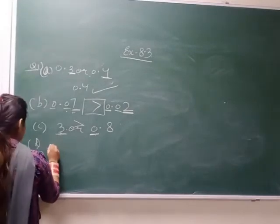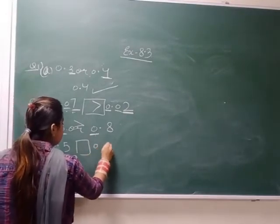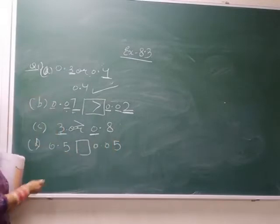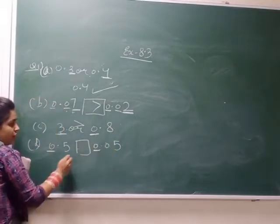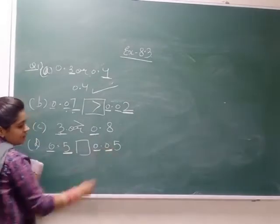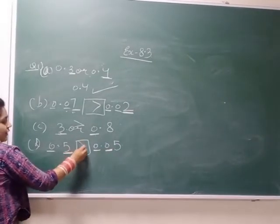Next, 0.5 or 0.05. Which is greater? After the 0 and the point, here it is 5 and here it is 0, so 5 is greater.